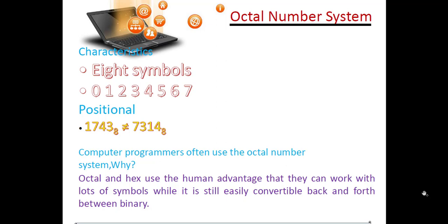So let's start with the octal number system. As the name represents, octal means 8. So in this number system we have 8 symbols: 0, 1, 2, 3, 4, 5, 6, and 7. These are the 8 possible symbols allowed in the octal number system. It differs from the decimal number system in that decimal has two more symbols, 8 and 9, but in octal, 8 and 9 are not allowed.